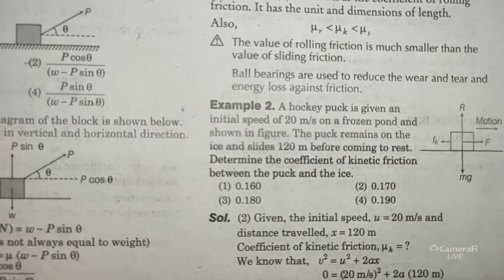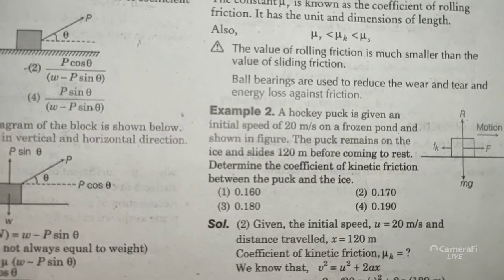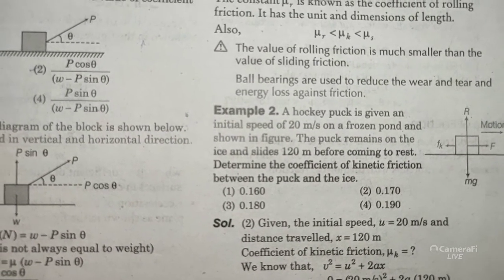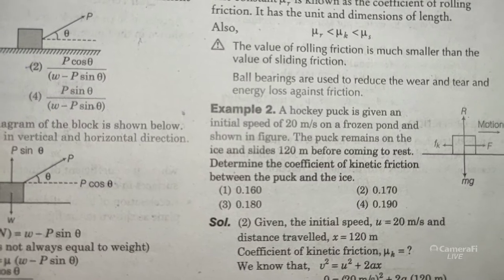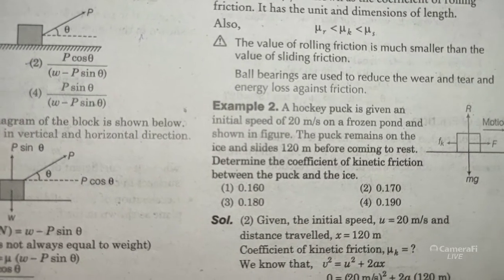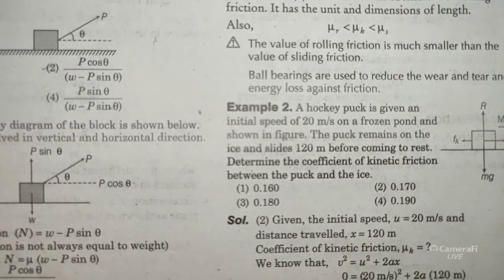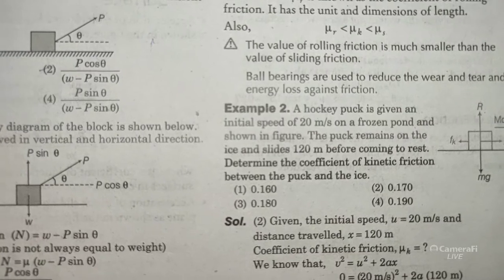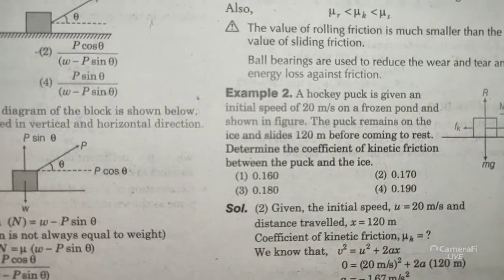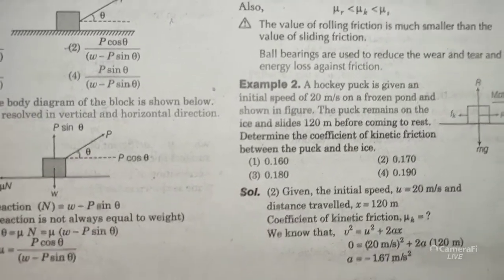Final velocity = 0, distance = 120 m. Using the kinematic formula v² − u² = 2as: putting in values, 0 = 20² + 2 × a × 120.